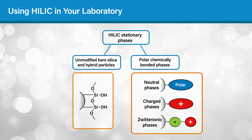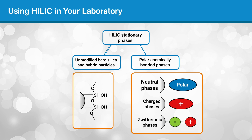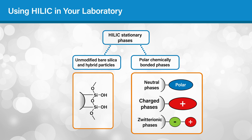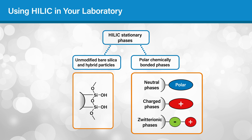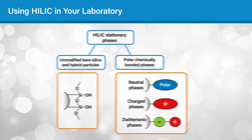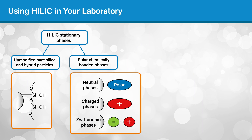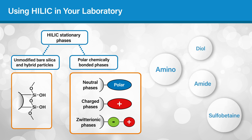The second group, polar chemically bonded stationary phases, can have either a neutral polar surface, a charged surface, or a zwitterionic surface. These phases often provide increases in retention and a different selectivity. Examples of some bonded HILIC chemistries are amino phases, amide phases, diol phases, and sulfobetaine.